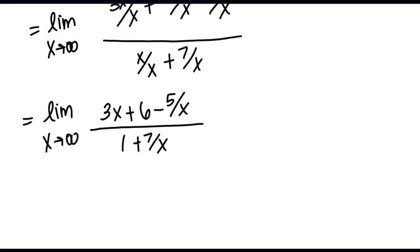Now that we've rewritten this expression, let's try thinking about the limit again. We're going to think about the limit term by term. Let's start with this 3x on top — what is happening to 3x as x goes to infinity? Well as x goes to infinity, that is as x gets arbitrarily large, 3x is also getting arbitrarily large, so this 3x term is going to infinity.